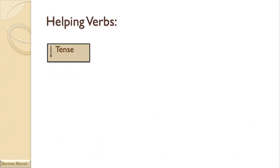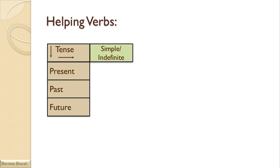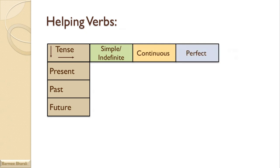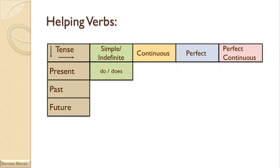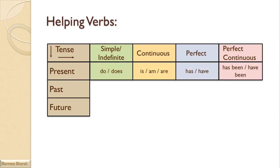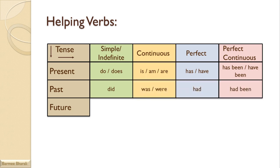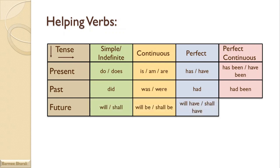Here are the helping verbs used in tenses according to their aspects. The helping verbs of present tense are: do, does, is, am, has, have, has been, have been. The helping verbs of past tense are: did, was, were, had, and had been. The helping verbs of future tense are: will, shall, will be, shall be, will have, shall have, will have been, or shall have been.